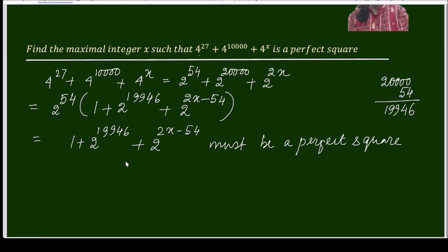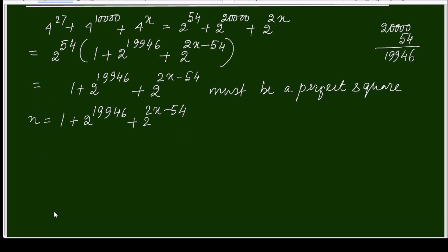Let us say n equals 1 + 2^19946 + 2^(2x-54). So instead of this big expression, I am writing this as n, and n is a perfect square.